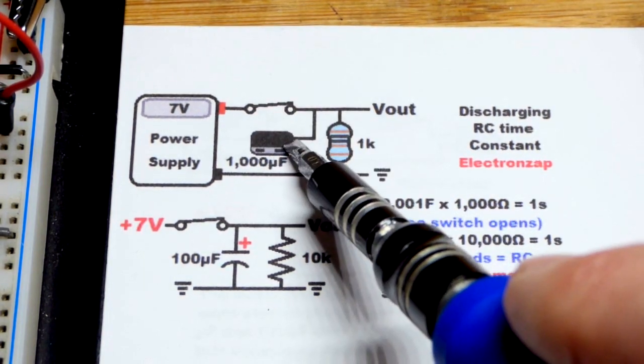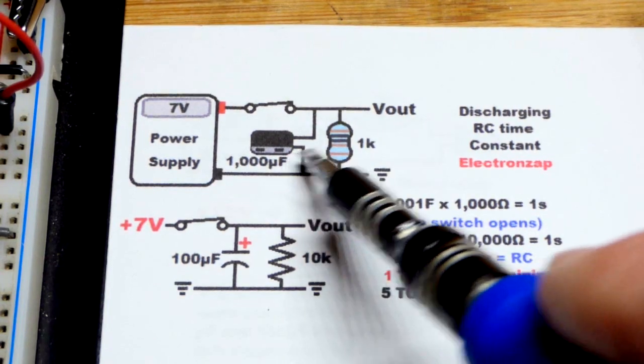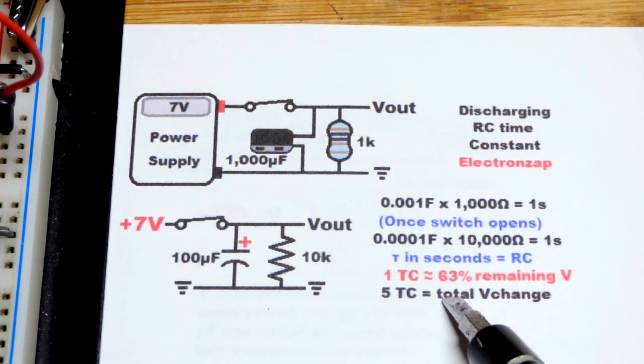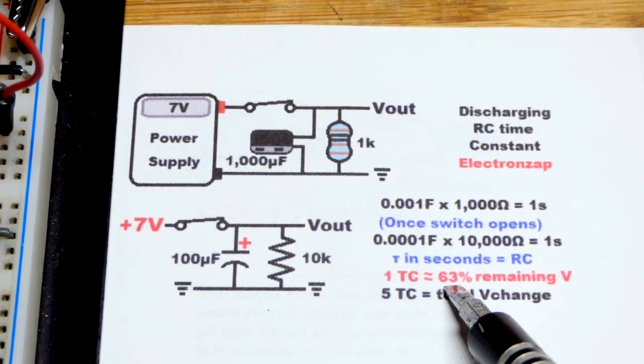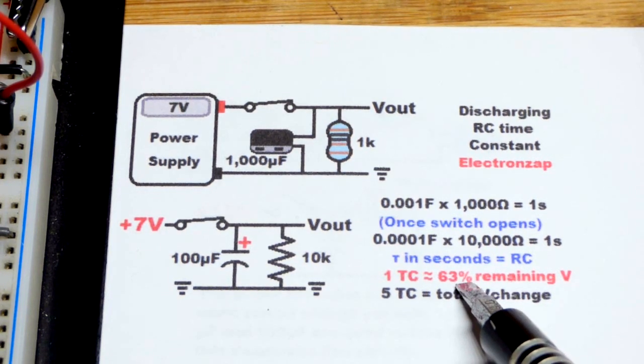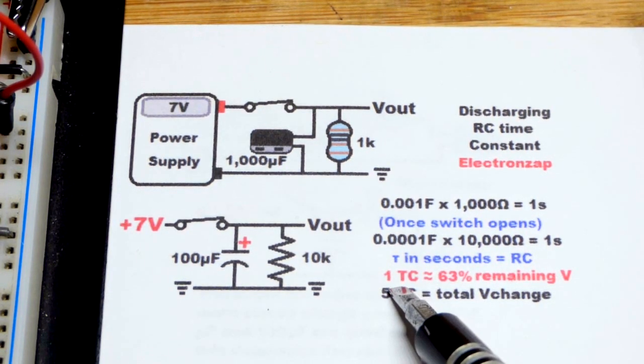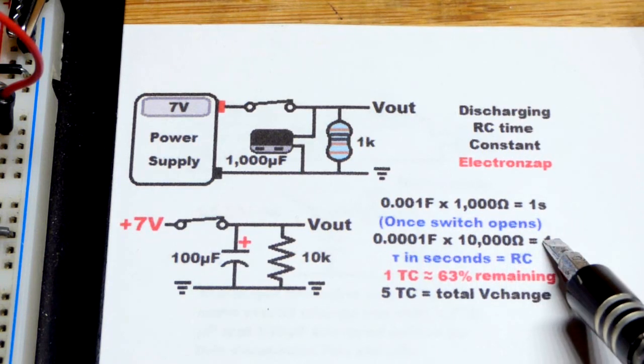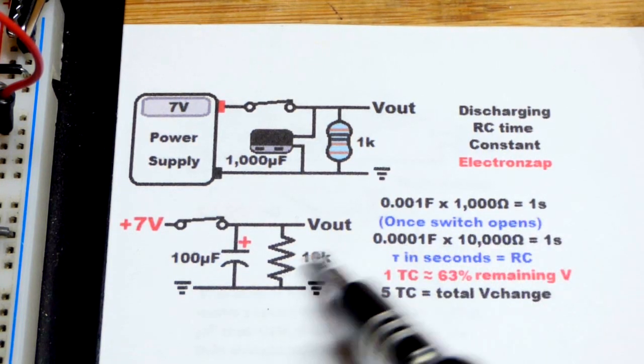Once we open the switch, the capacitor is going to discharge through the resistor. And so it's going to discharge really fast at first. We're going to get about 63% of the change in the first time constant. And so that's going to be about one second for both of these circuits.